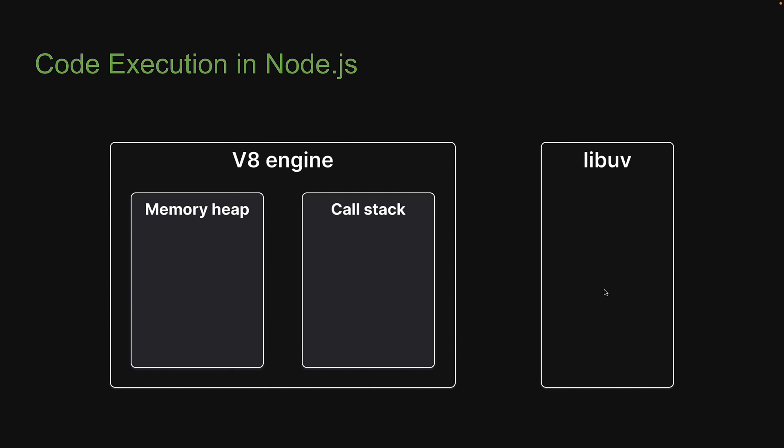LibUV will then run the task using native async mechanisms of the operating system. And if that is not possible, it will utilize its thread pool to run the task, ensuring the main thread is not blocked. Let's now walk through two simple code snippets and understand how the V8 engine and libUV are used by Node.